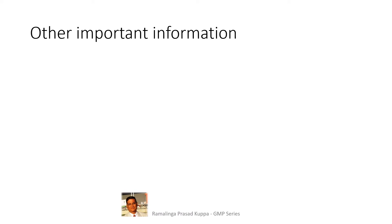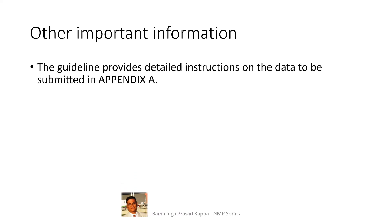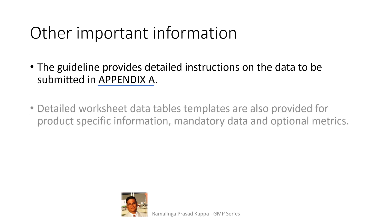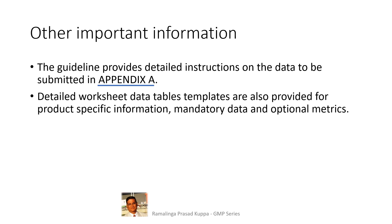The guideline provides detailed instructions on the data to be submitted in Appendix A. All menu details are provided in Appendix A — you may go through the guidance for more details. Detailed worksheet data tables and templates are also provided for product-specific information, mandatory data, and optional metrics. The templates are much easier to capture the necessary data without any miss-outs.